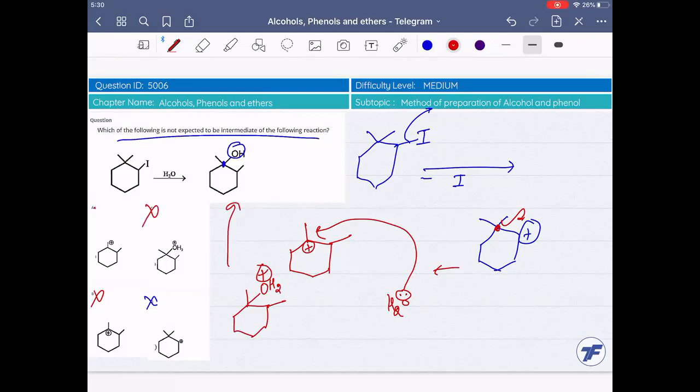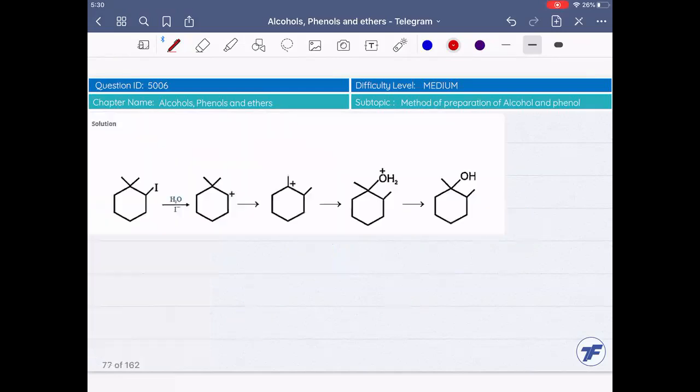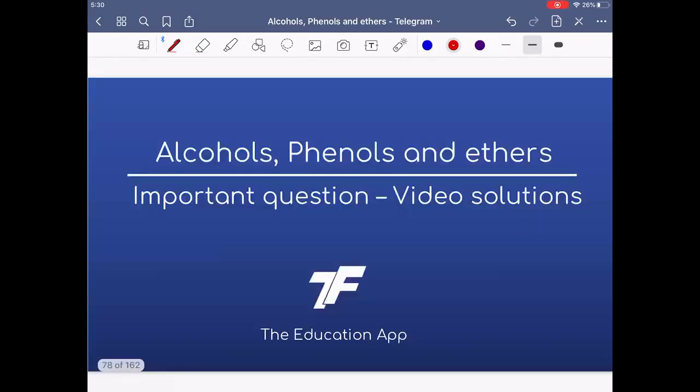So option C and then option A, which will not be the intermediate form.